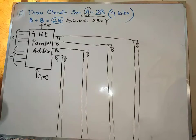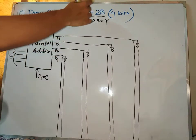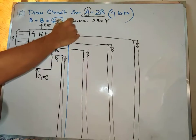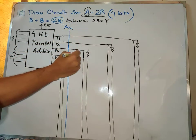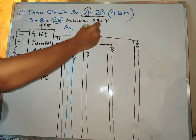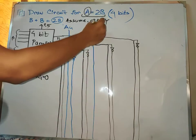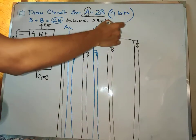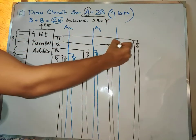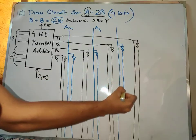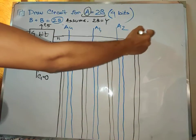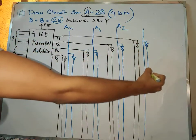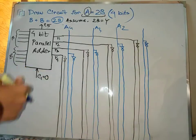So let's move on to the next part. Here we have the necessary input. This is completely correct, so we have to keep this input. Here we have A4, A3, A2, and finally A1.